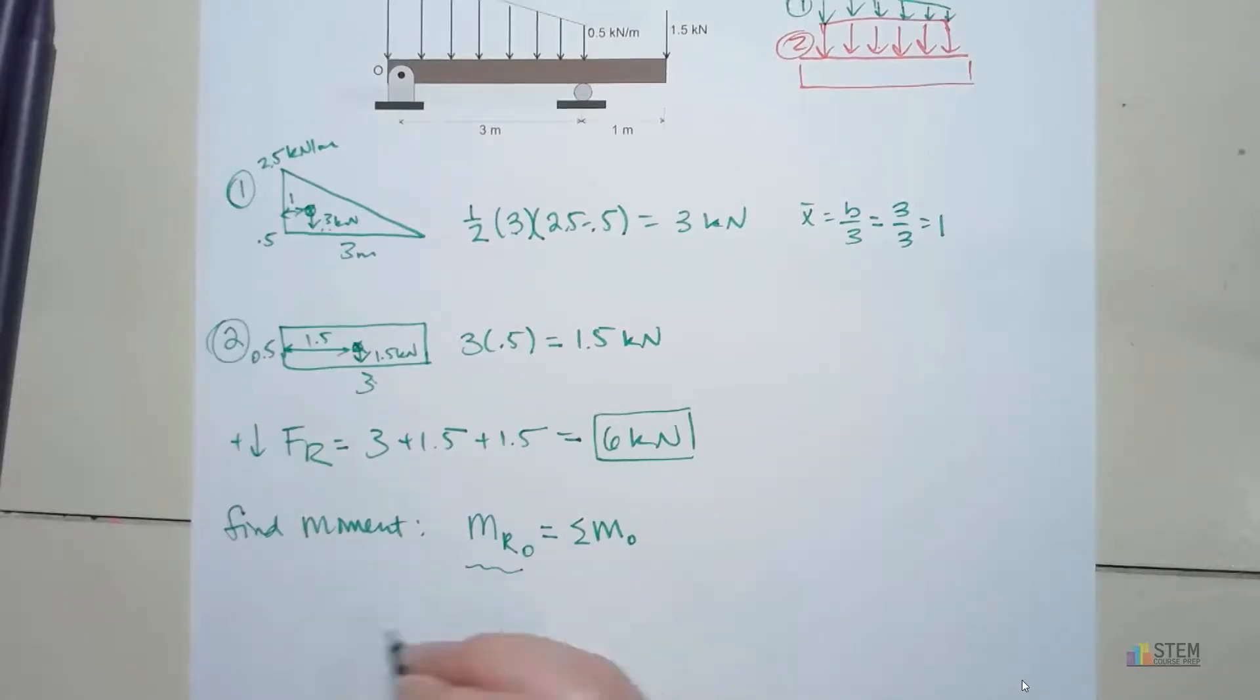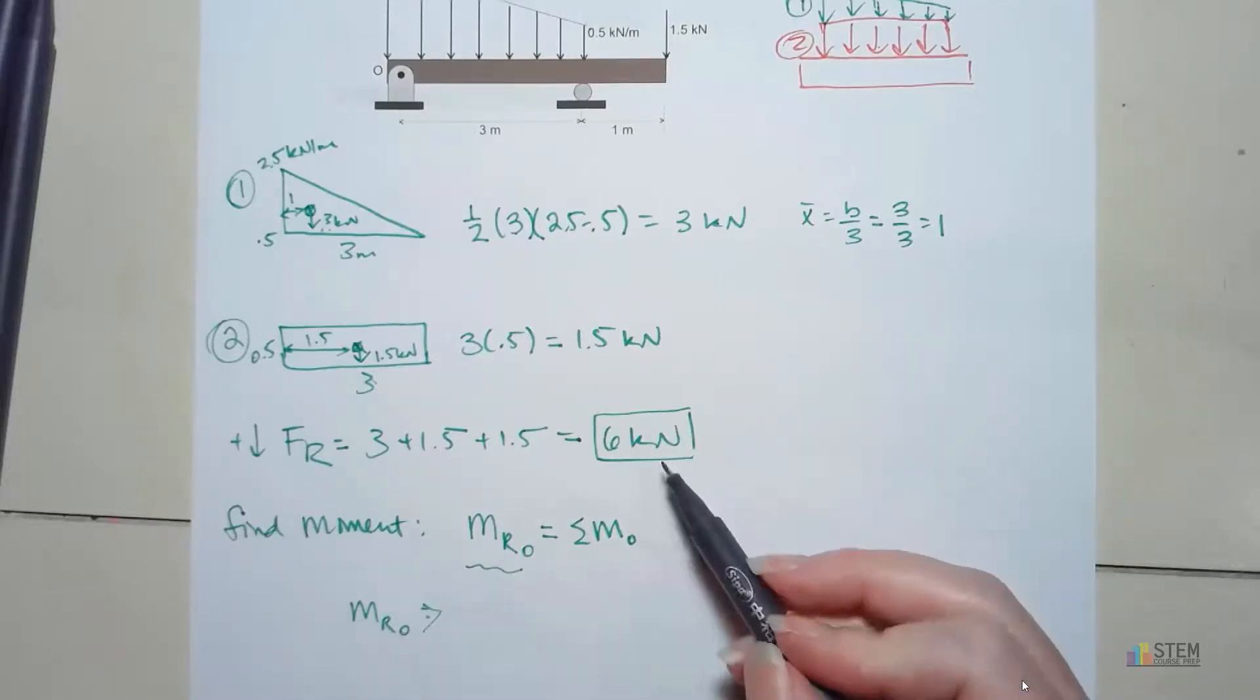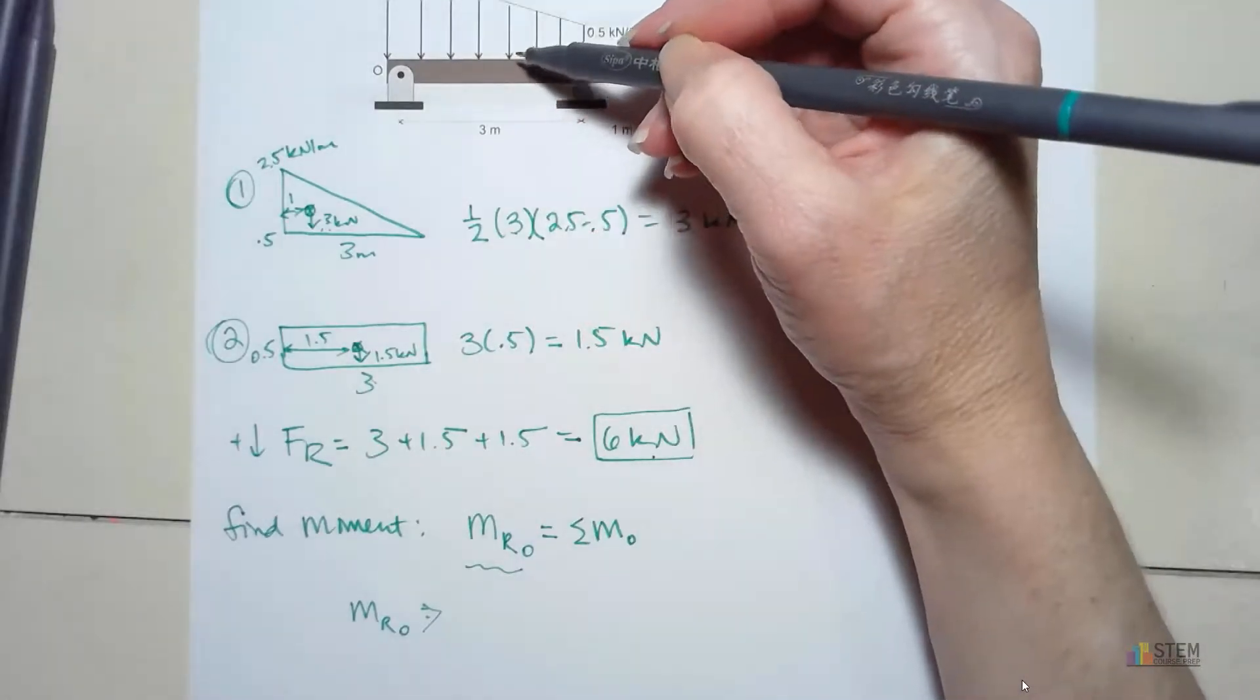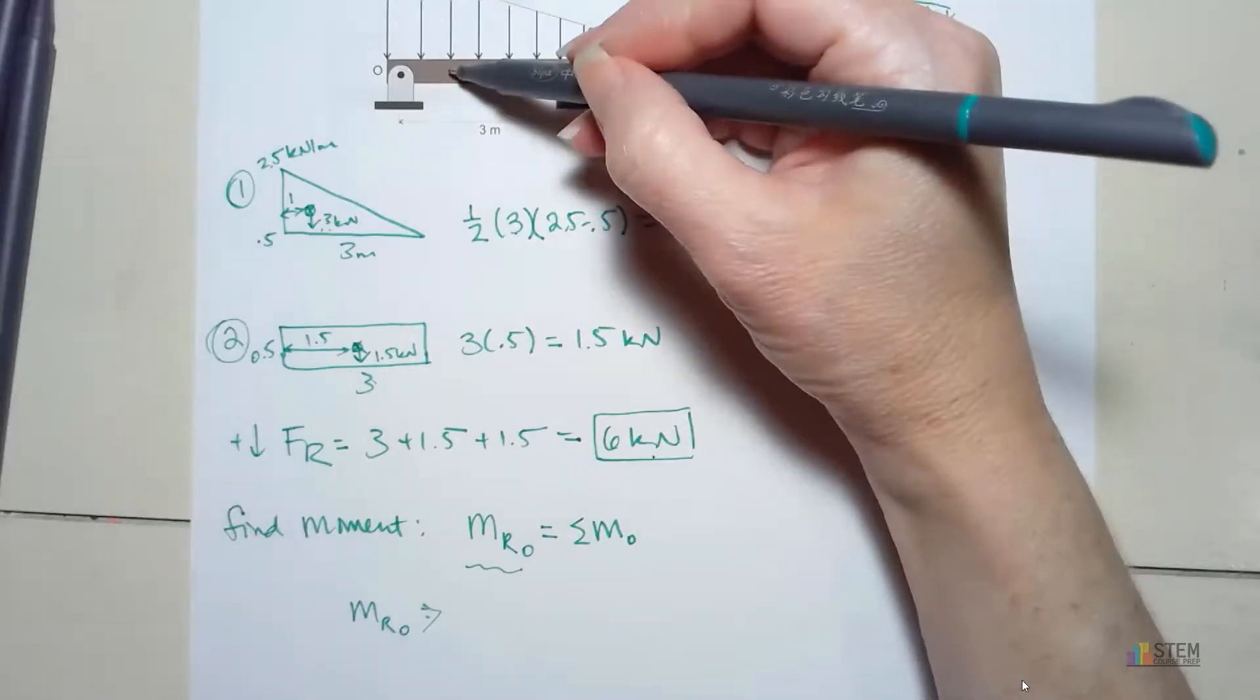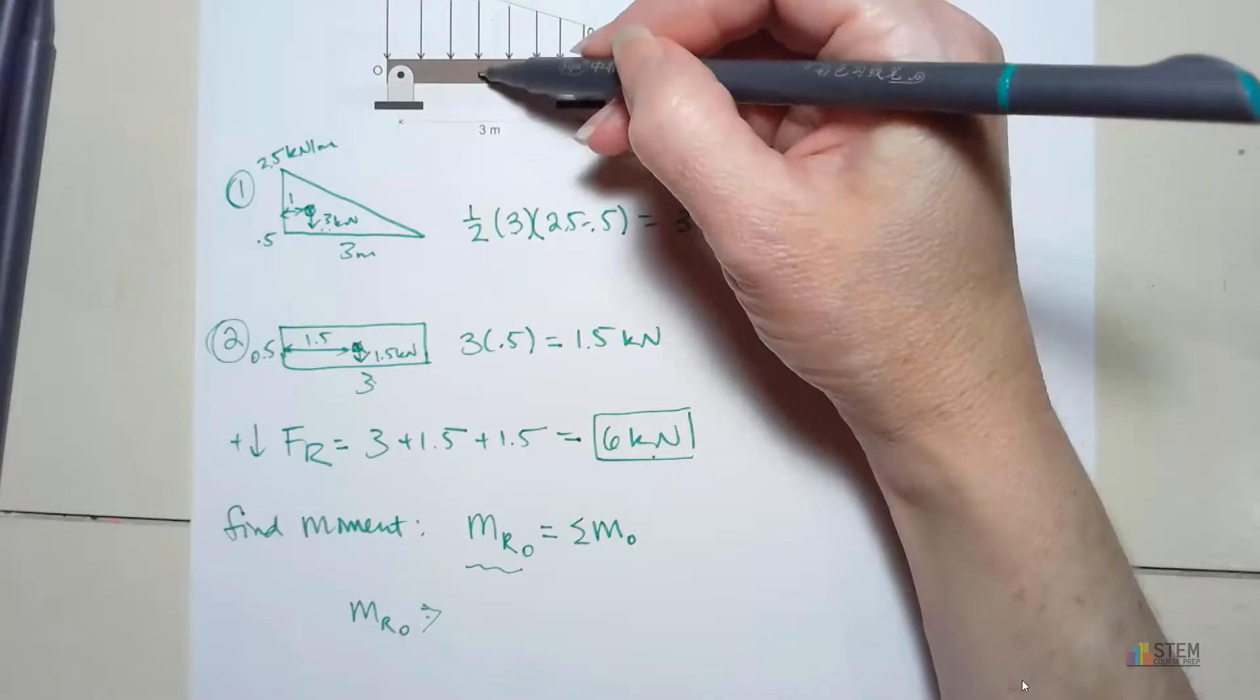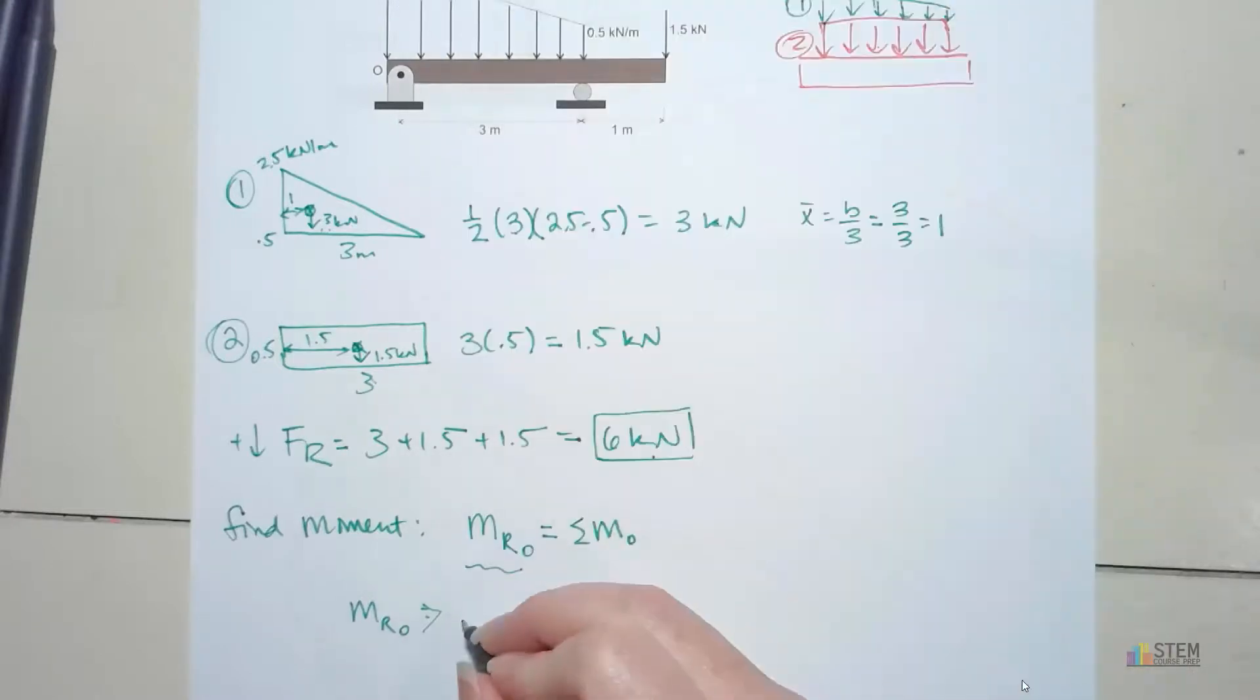Let's do this side first. Now the resultant force is 6. And we don't really know the distance that we have here, but it's going to be somewhere to the right of O. So if it's to the right of O, we know it's got to be going down. So that's going to be a negative moment. That's going to give us negative 6 times some distance D. So let's just put negative 6D.